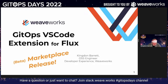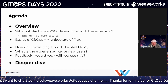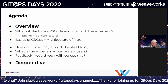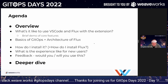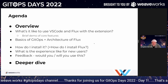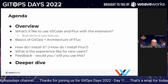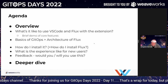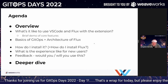I'm really excited to give this demo that we've been working on for quite a while. This will be the GitOps VS Code extension for Flux Beta Marketplace release demo. The good news for today is we're actually in the marketplace, as you'll see soon. My name is Kingdon and I'm a Flux maintainer. I've been working on this extension with lots of folks from Weaveworks and some folks from outside. Here's our agenda: we're going to start with VS Code and Flux with the extension — what does it look like, what are the core features — then a brief talk about GitOps itself and the architecture of Flux, how we install this extension, how we install Flux, and maybe get into a deeper dive if we have enough time.